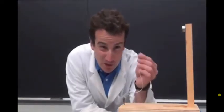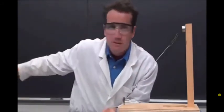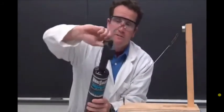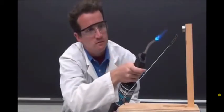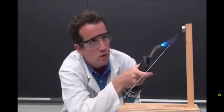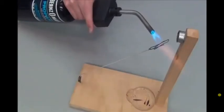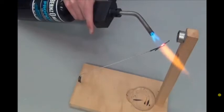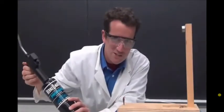This iron paperclip can be magnetized by this magnet. The magnetic domains in the paperclip can be destroyed by heating, and the magnetism is lost.